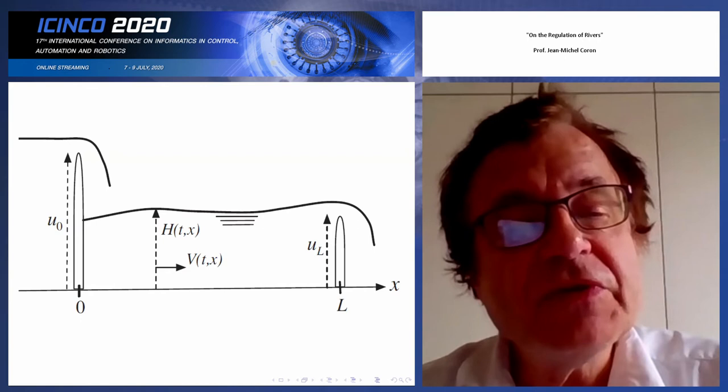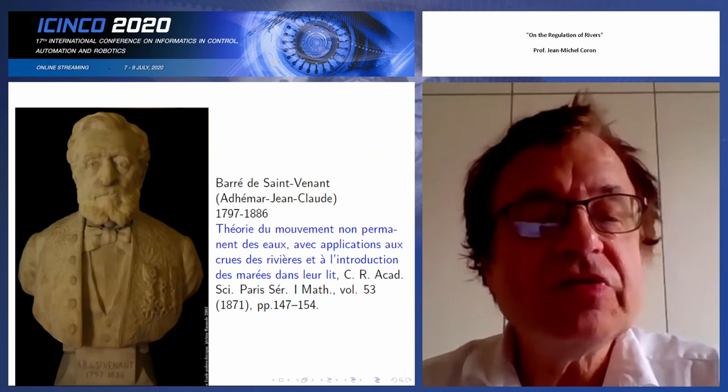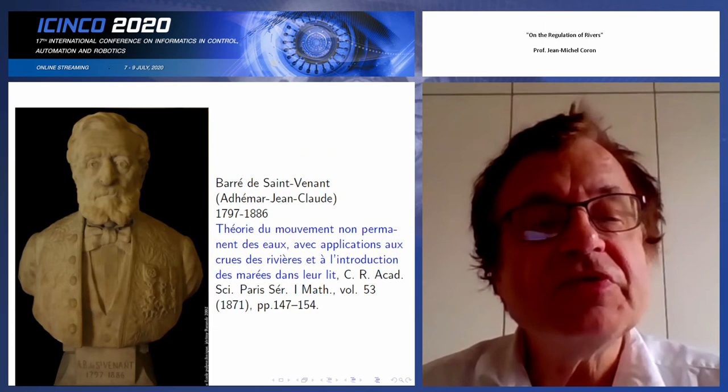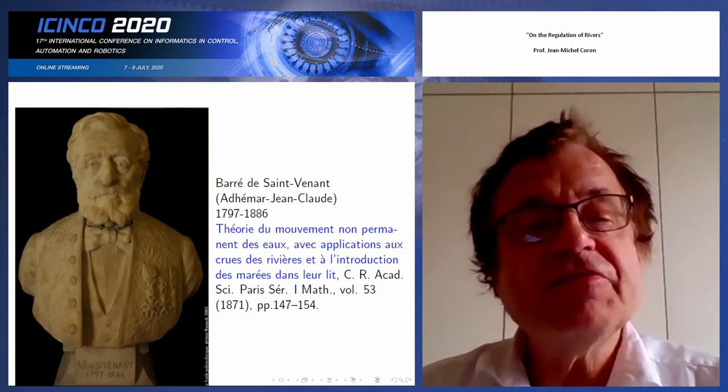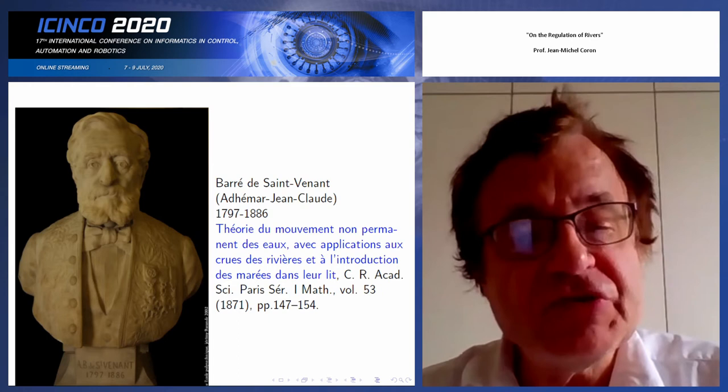The Saint-Venant equation is due to Saint-Venant, who found it in 1871. The important point is that usually one says when you are more than 50 you cannot do something really interesting in science, and he found his laws when he was 74 — something that I found very encouraging.